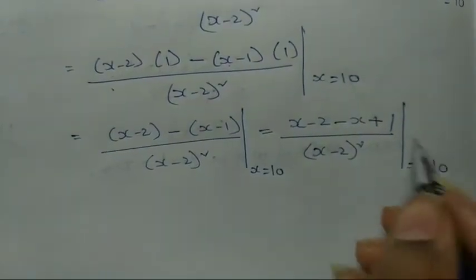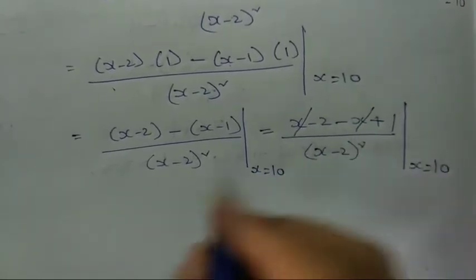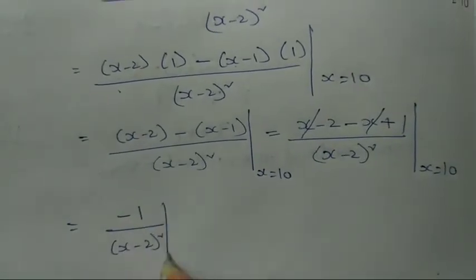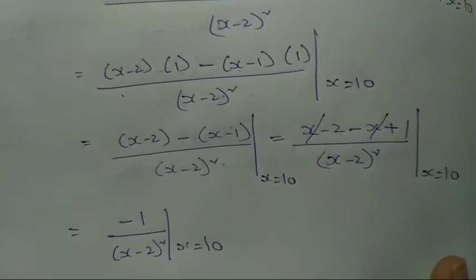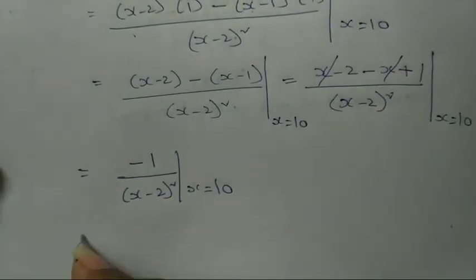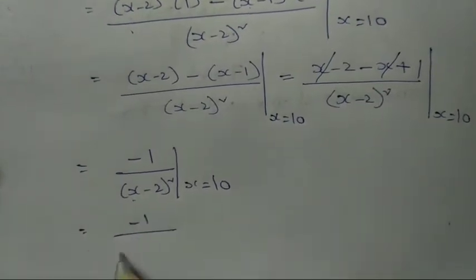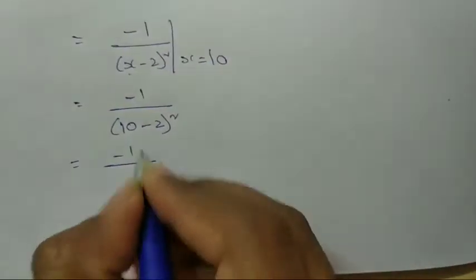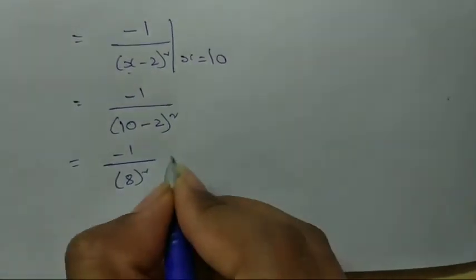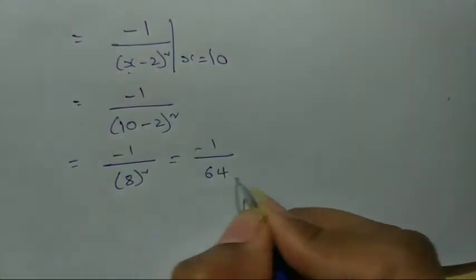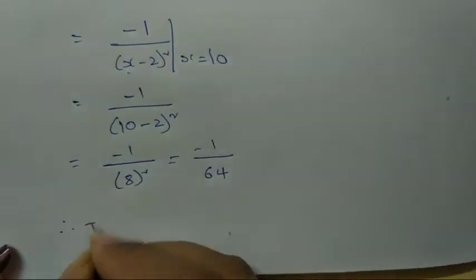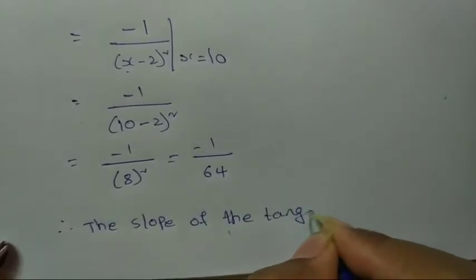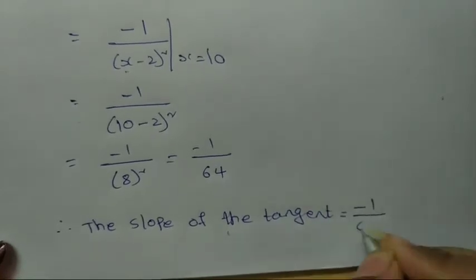So dy/dx = −1/(x−2)². Now substituting x = 10: −1/(10−2)² = −1/8² = −1/64. Therefore the slope of the tangent is equal to −1/64.